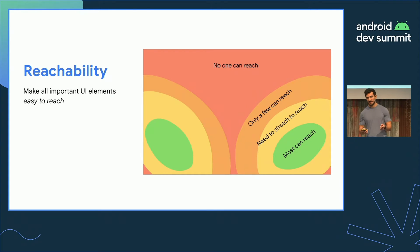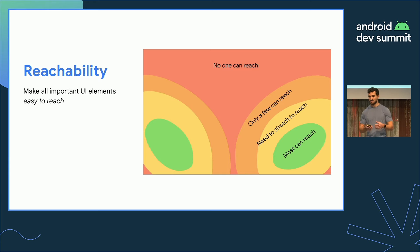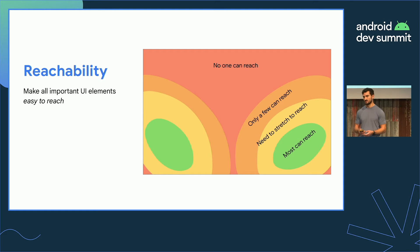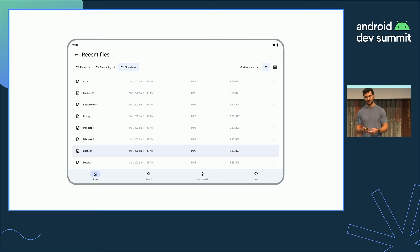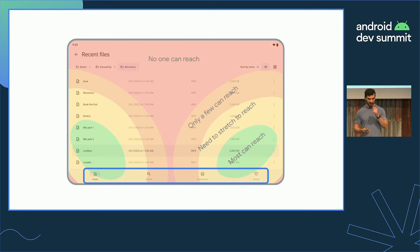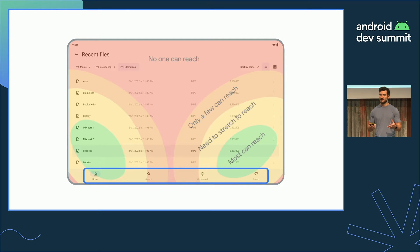Let's get into practical tips, starting with reachability. Most tablets and larger screen devices are often used in landscape, so the way a user holds and interacts with the device will be different than on a typical phone. Some common placements of UI elements may be more difficult to reach, causing users to adjust their grip. One example is navigation: if you overlay a reachability chart, center-focused navigational elements can be quite hard to reach on a large screen in landscape.